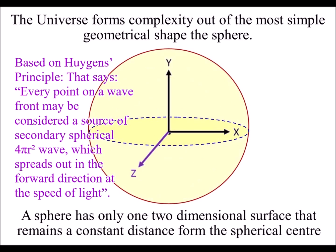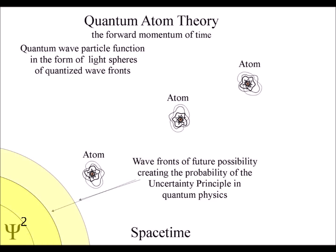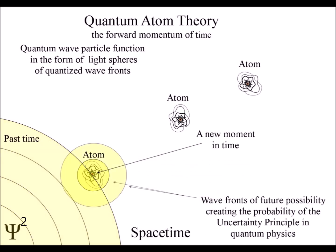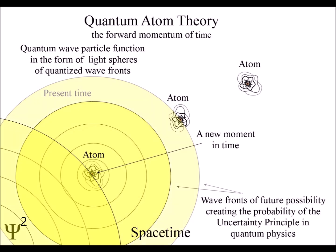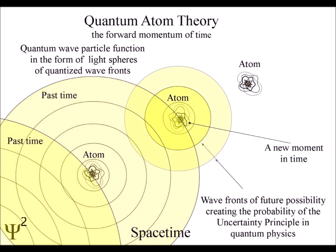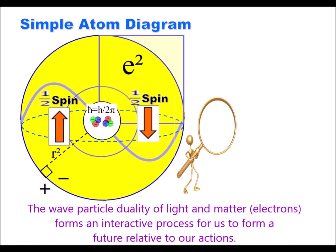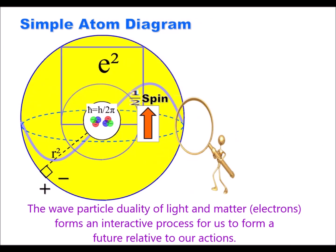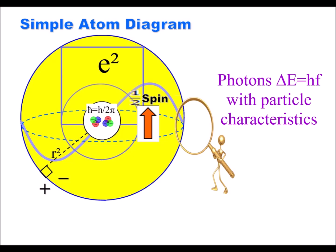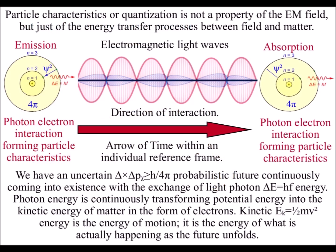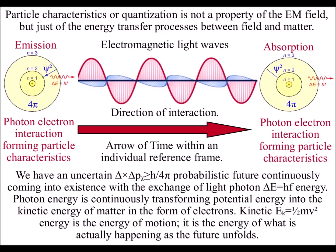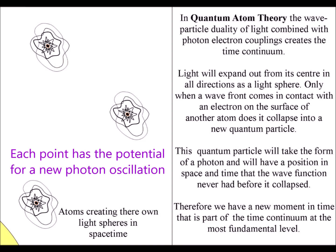The interior of the sphere will naturally create three-dimensional space. The two-dimensional surface of the sphere forms a manifold or boundary condition and forms a continuum of time with an uncertain probabilistic future. The spherical symmetry creates the particle characteristics of light, with photons continuously transforming potential energy into kinetic energy as the future unfolds.